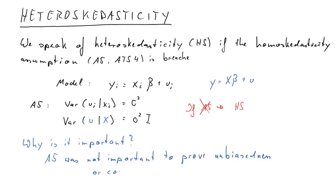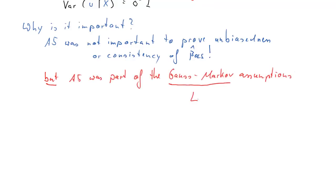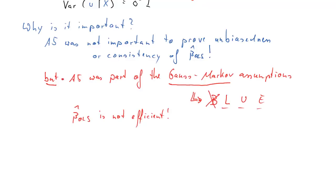Why is it important? A5 was not important to prove unbiasedness of OLS coefficient estimators, nor was it important to prove consistency of beta hat OLS. But A5 was part of the Gauss-Markov assumptions, which were used to establish that the OLS parameter estimators were BLUE — best linear unbiased estimator. It turns out that the 'best' property no longer holds if we have heteroscedasticity. The OLS estimator is not efficient anymore.